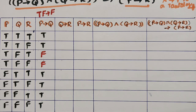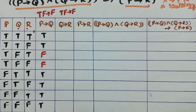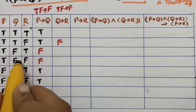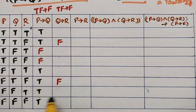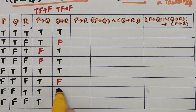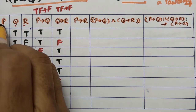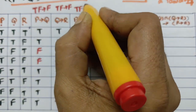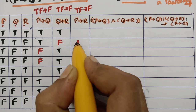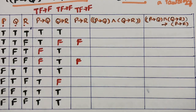Next, compute q→r. For implication, check for true-false pairs. There is a true-false here — write false; another true-false — write false. The remaining entries are all true. Then compute p→r similarly: there are true-false pairs — write false for those rows. The rest are all true.